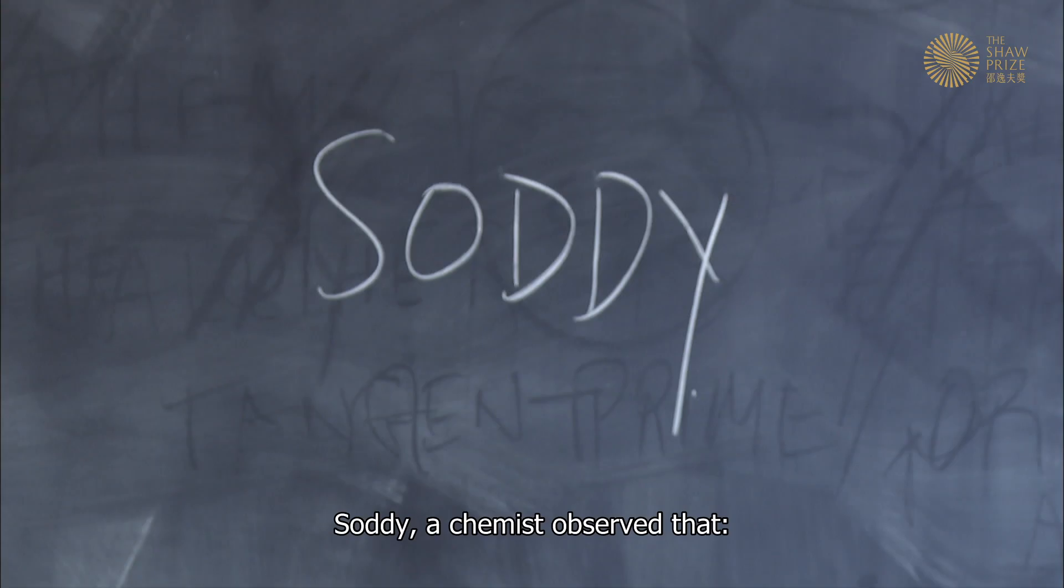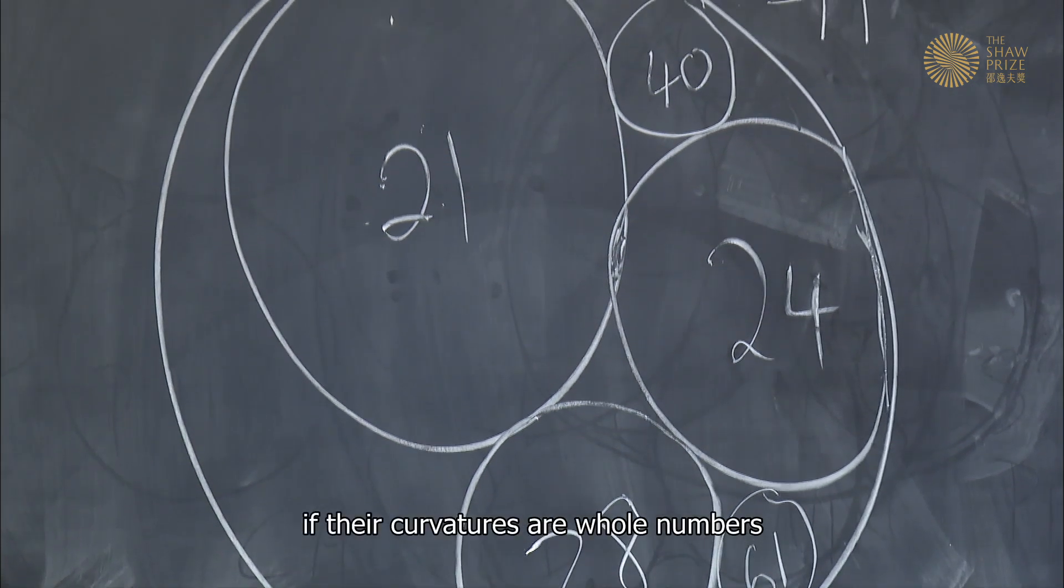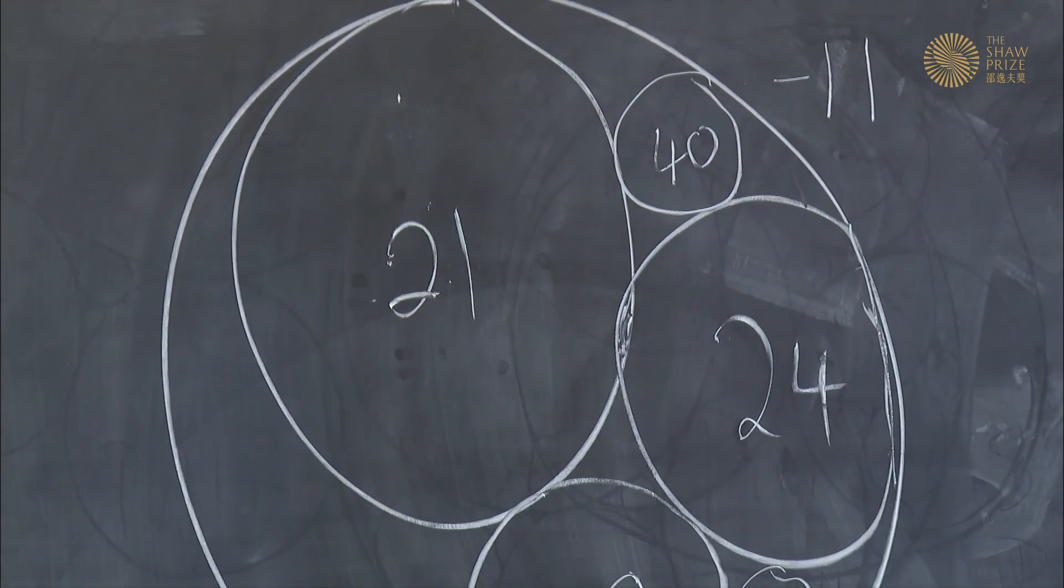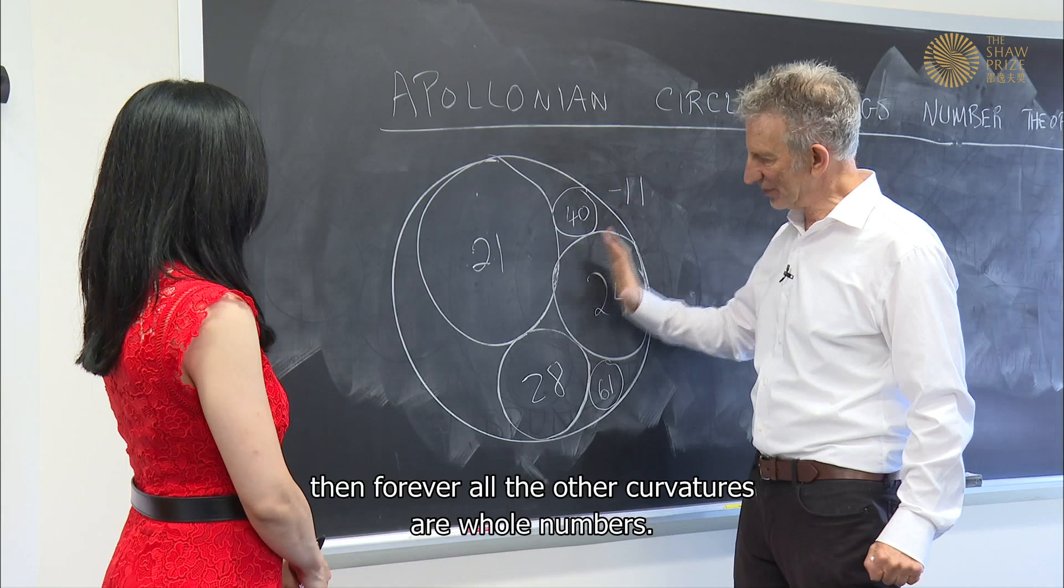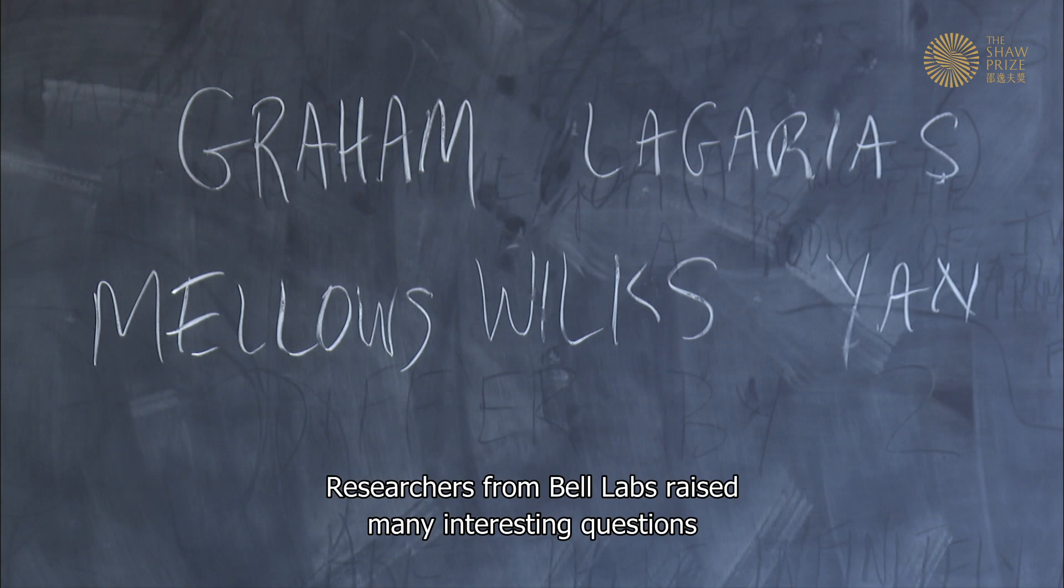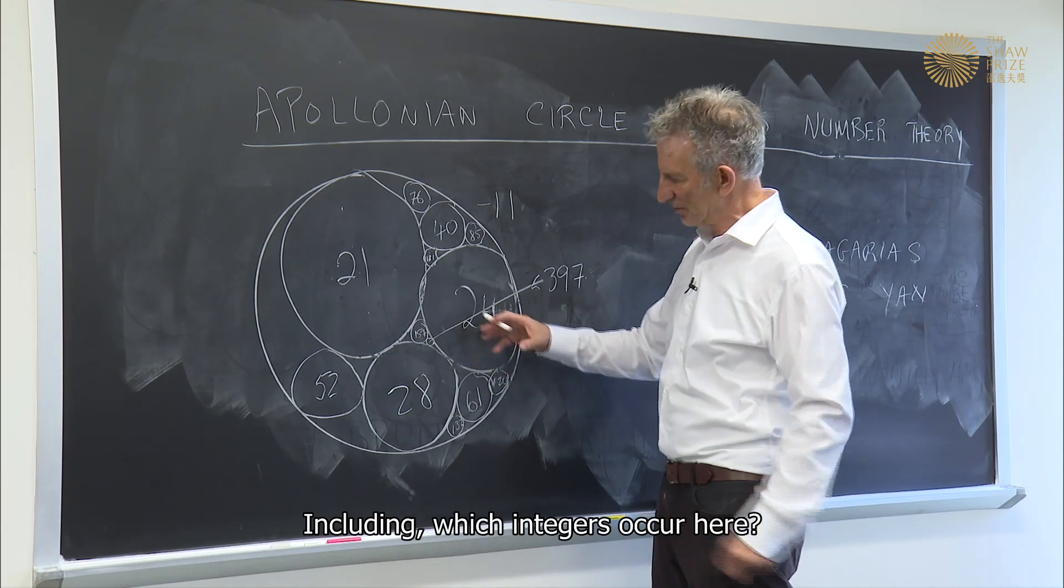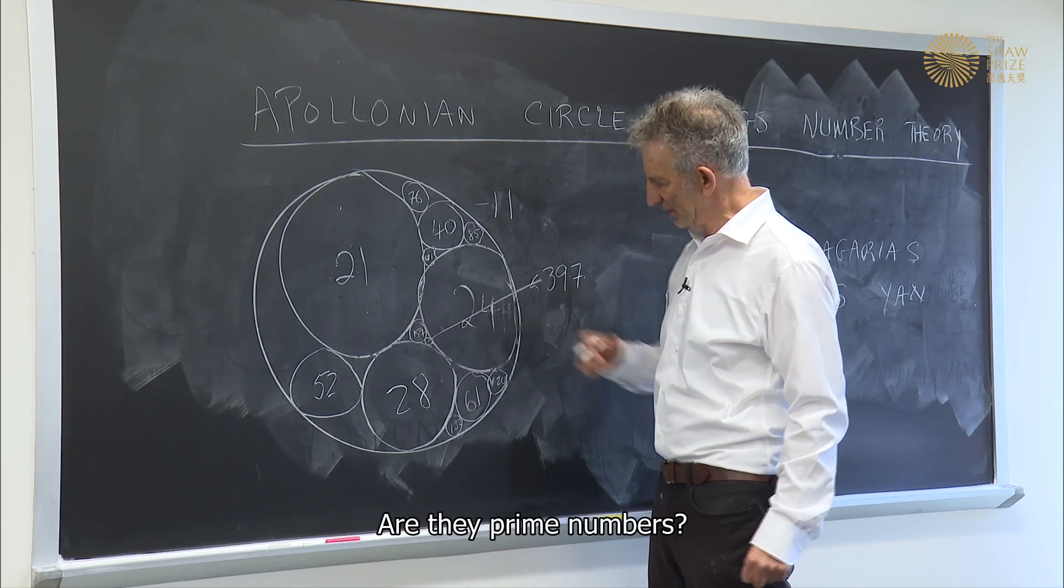Soddy, a chemist, observed that if we start with four circles and their curvatures are whole numbers, then forever all the other curvatures are whole numbers. Researchers from Bell Labs raised many interesting questions related to the number theory of circle packings, including which integers occur here, which prime, are there prime numbers.